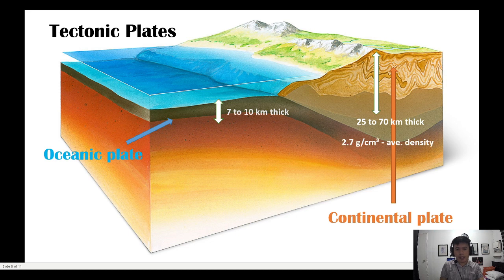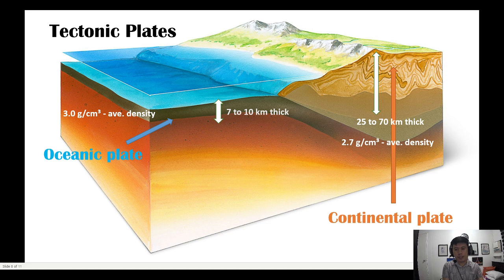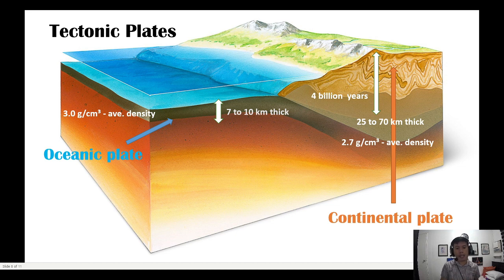For density, continental plates have an average density of 2.7 grams per cubic centimeter, while oceanic plates have a density of about 3.0 grams per cubic centimeter — so the oceanic plate is denser than the continental plate. Using radioactive dating techniques, it was found that the rocks in the continental plate are about 4 billion years old, while for the oceanic plate it's about 260 million years. So the continental plate is older.